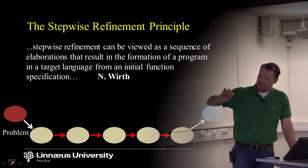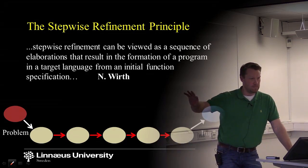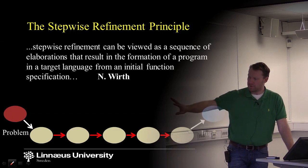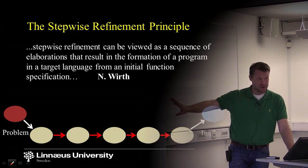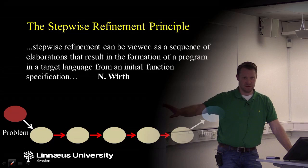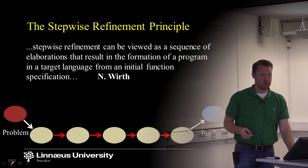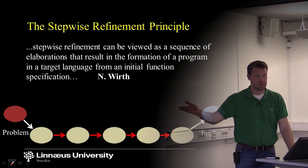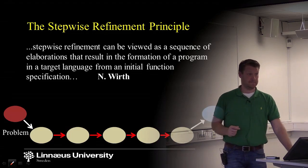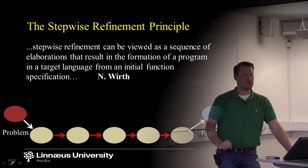So we will have models for the problem, and we will have models for the implementation. For the implementation, it's easy to see that here you find programming language models — source code. But what could the models in between look like? That's what we're going to talk about today.